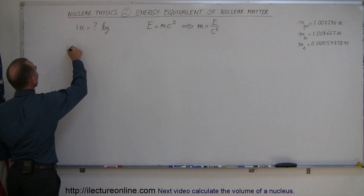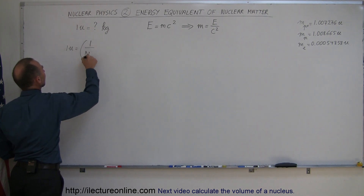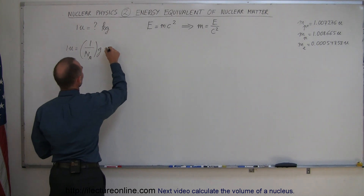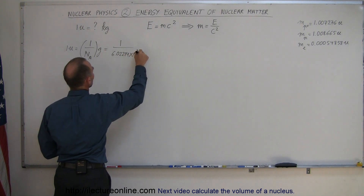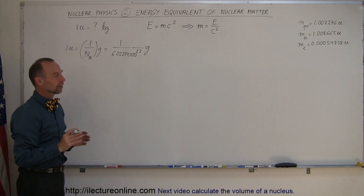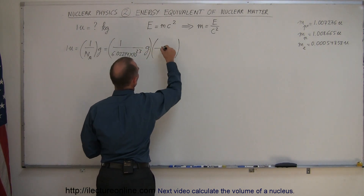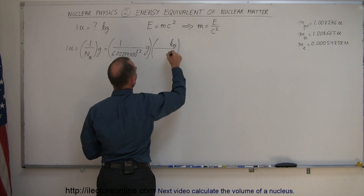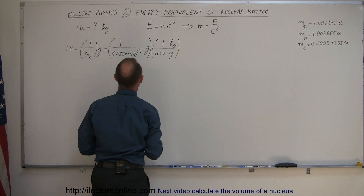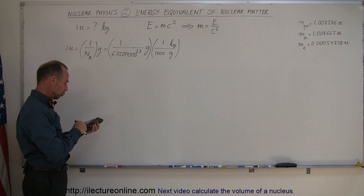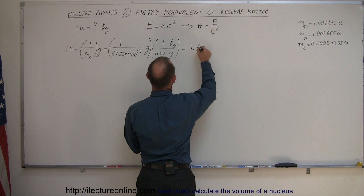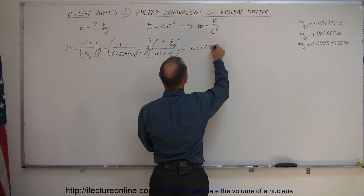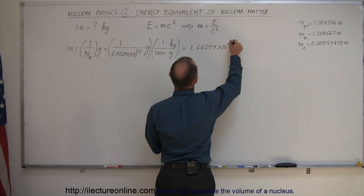One atomic mass unit is equal to 1 over Avogadro's number in grams. Avogadro's number is 6.02214 times 10 to the 23, so that gives us 1 over 6.02214×10²³ grams. We convert that to kilograms by multiplying by 1 kilogram over 1,000 grams. Taking the inverse of 6.02214×10²³ and dividing by 1,000, we get 1.66054×10⁻²⁷ kilograms.